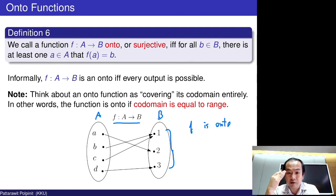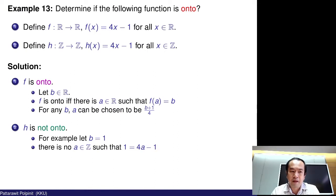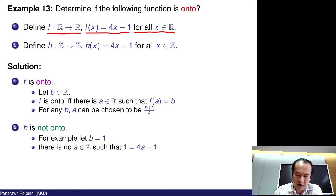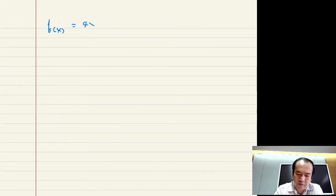For example, let's just look at this picture. f is a function from A to B — this is set A, this is set B. You can see that every output, or every element in the codomain, has a connection or relation from at least one element or member in the domain set A. So this f is an onto function, as all the members in the codomain are reachable from some member in set A.